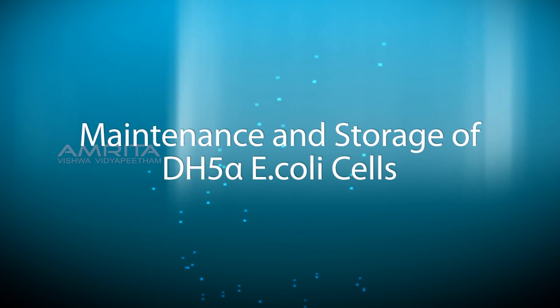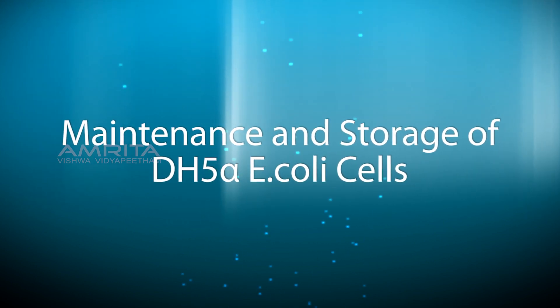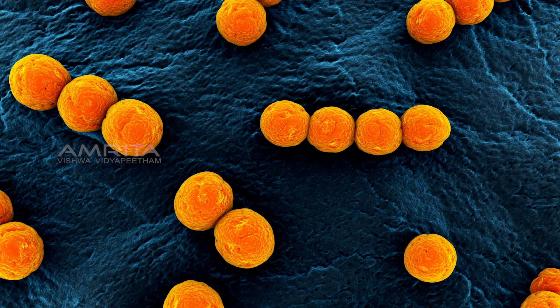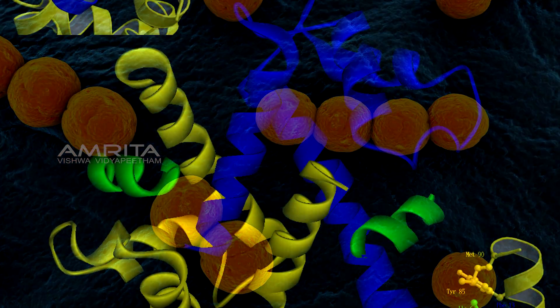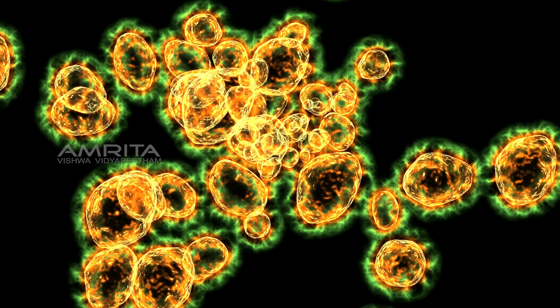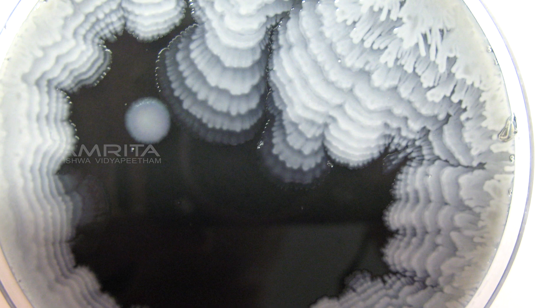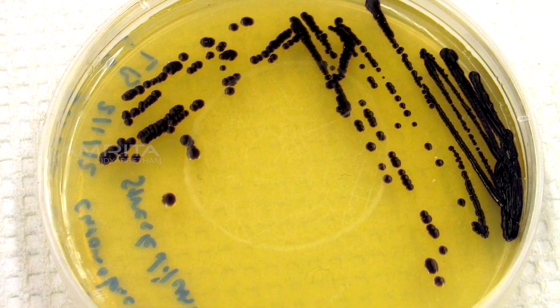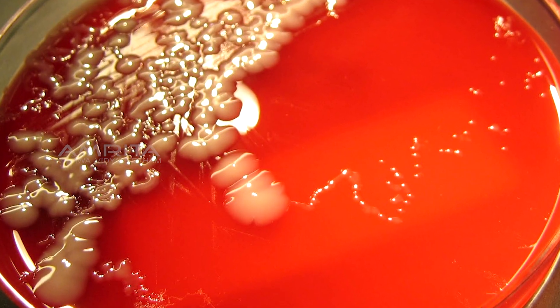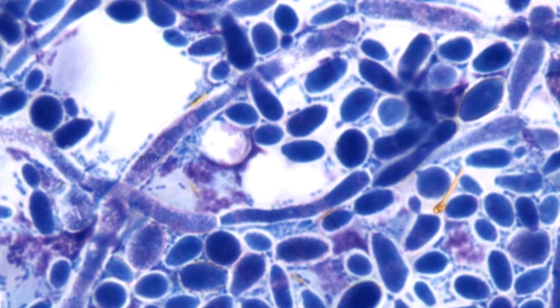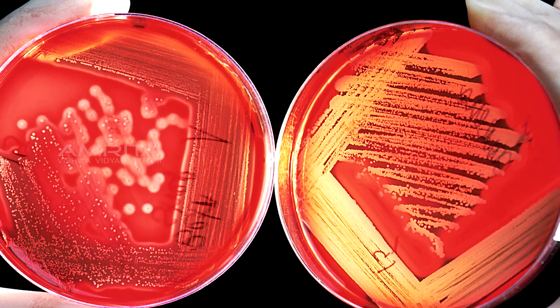Maintenance and storage of DH5-alpha E. coli cells. One of the most important aspects of a microbiology or molecular biology laboratory is to maintain and store microbial cultures. By using effective storage, the organisms will remain in a viable state without any contamination and retain their characteristics.